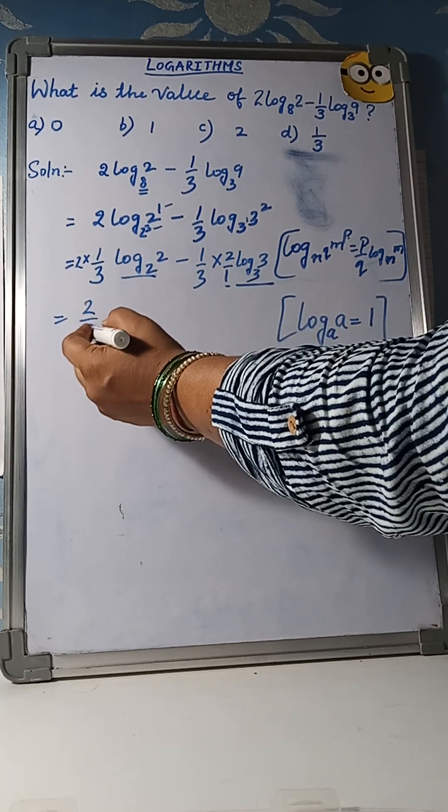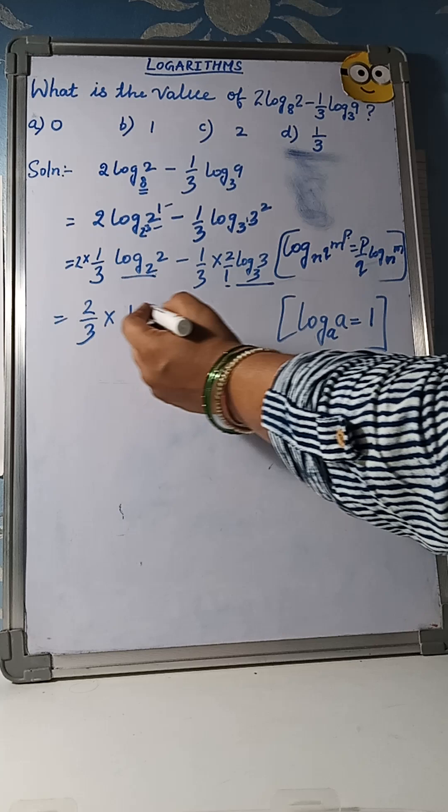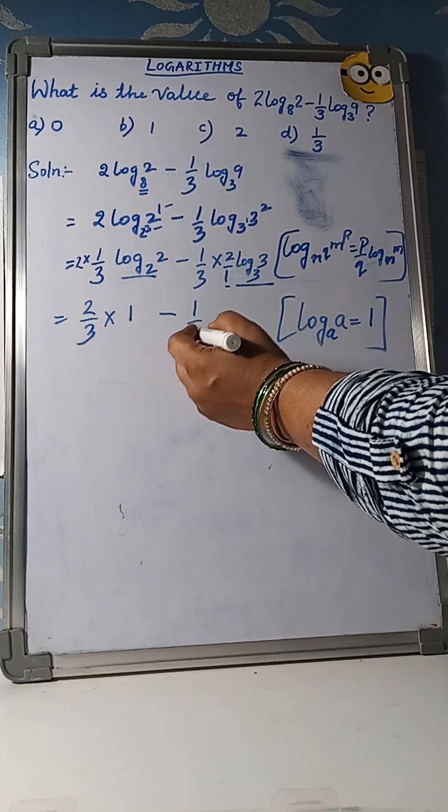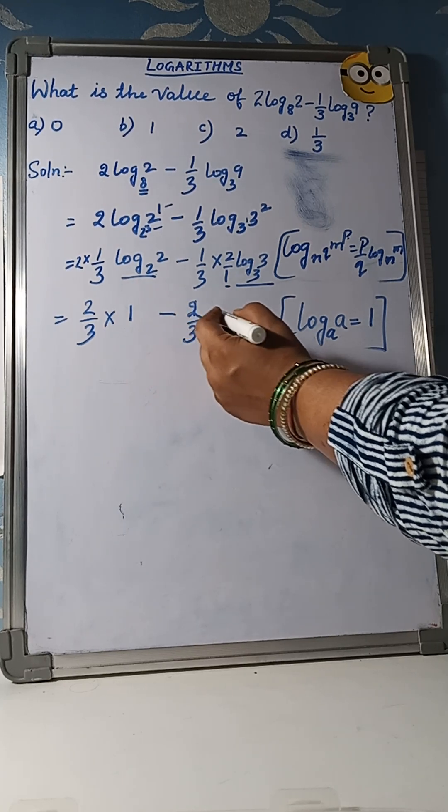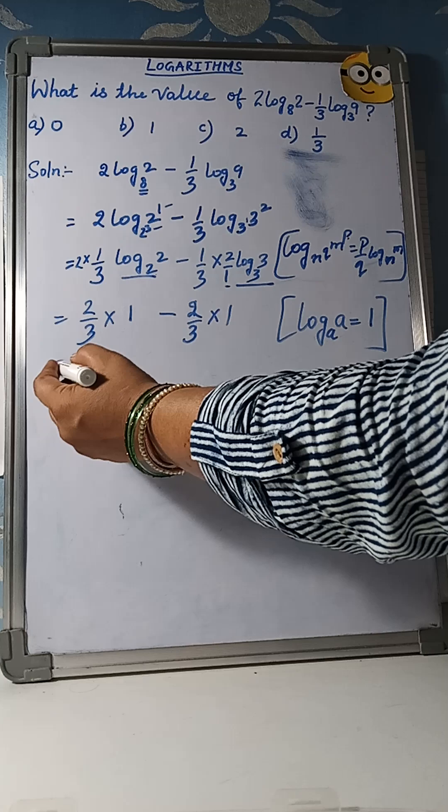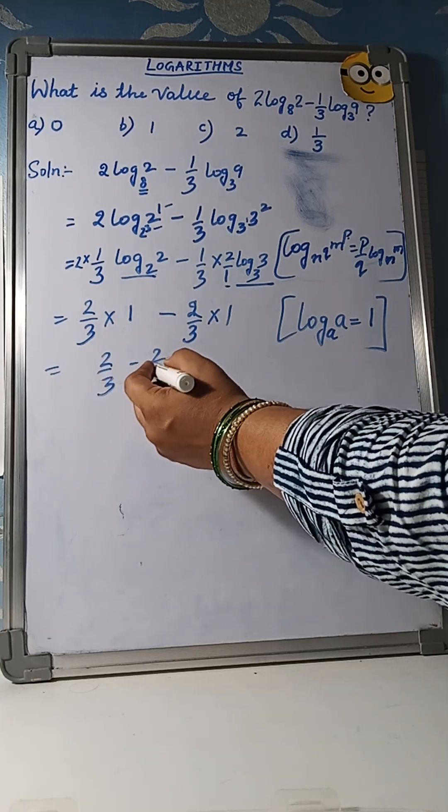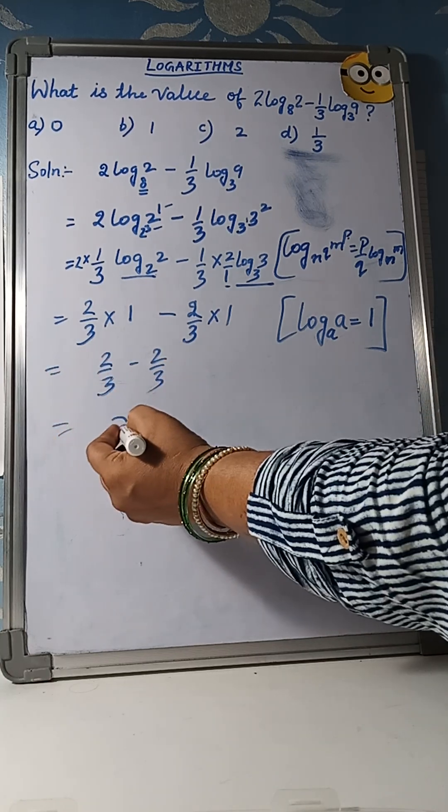2/3 × 1 minus 1/3, 2/3 and this will become 1. 2/3 minus 2/3 equal to 0.